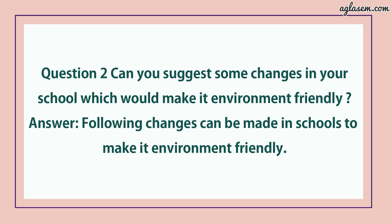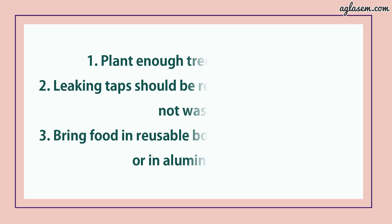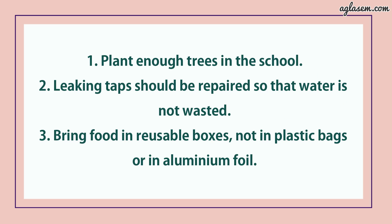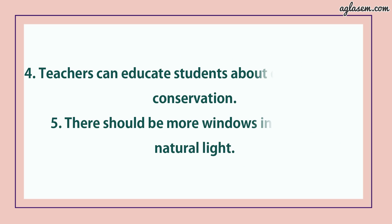Question number 2 says: can you suggest some changes in your school which would make it environment friendly? Following changes can be made in school to make it environment friendly. First, plant enough trees in the school. Second, leaking taps should be repaired so that water is not wasted. Third, bring food in a reusable box, not in plastic bags or aluminium foil. Fourth, teachers can educate students about environmental conservation. Fifth, there should be more windows in schools for natural light.